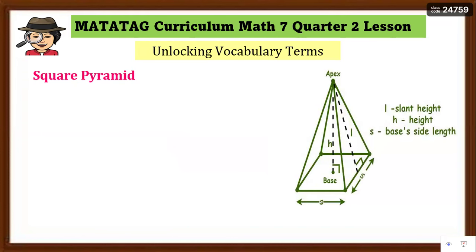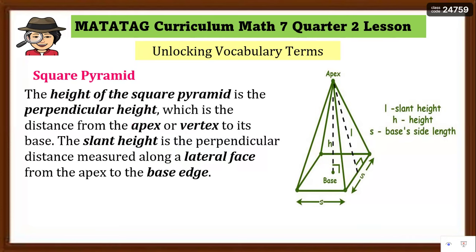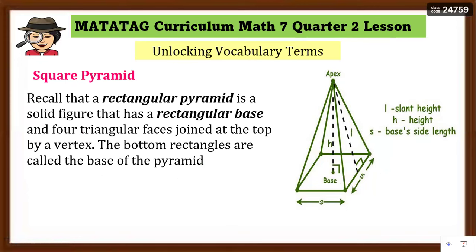Here is a picture of a square pyramid. We have the apex mentioned earlier, the base height, and the base side length. The height of the square pyramid is the perpendicular height — the distance from the apex at the top, or the vertex, to its base. The slant height is the perpendicular distance measured along the lateral face, from the apex to the base edge. The base edge is the side of the base.